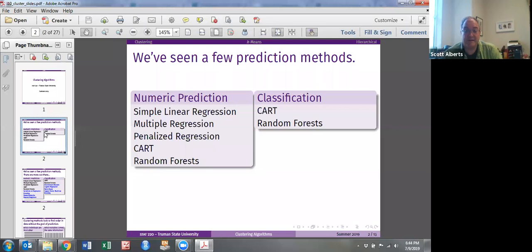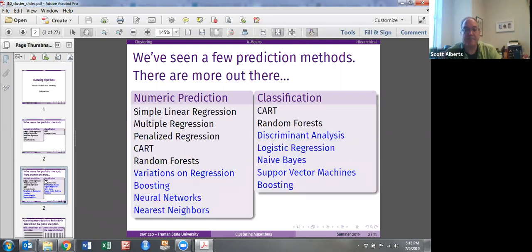In the course, we actually talked about a pretty big set of prediction model methods. In numeric prediction, we talked about simple regression, multiple regression, penalized regression. We had CART and random forest models which can do both numeric prediction and classification. But there are a whole bunch of other techniques that we're not really going to have time to talk about, things like logistic regression, neural networks, support vector machines.